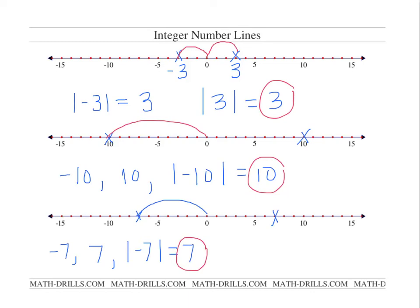Let's look at one last example. What if I have this number right here? What is that number on the number line? That number is 13. What is the opposite of 13? The opposite of 13 is negative 13. And finally, what is the absolute value of 13? How far away from 0 is 13? That's right — the absolute value of 13 is 13.